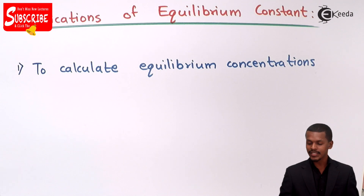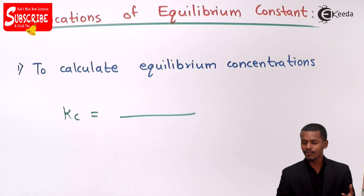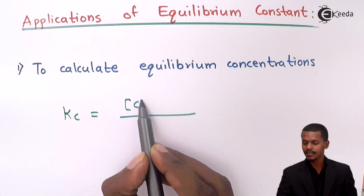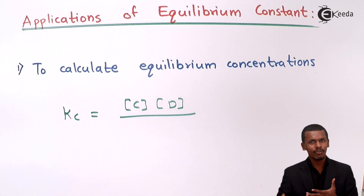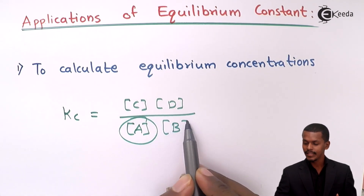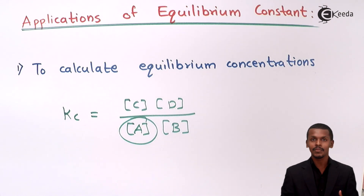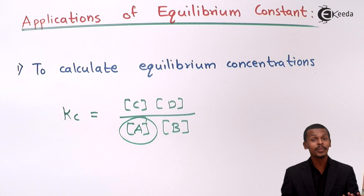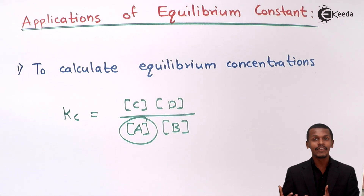Suppose if we know the equilibrium constant value Kc, and we have to calculate the equilibrium concentration of a particular reactant or product. For example, suppose we know the concentration of products C and D at equilibrium, but we don't know the concentration of A — though we have the concentration of B. Since every other detail is known, and the equilibrium constant is maintained, we can easily determine the concentration of that unknown reactant or product.